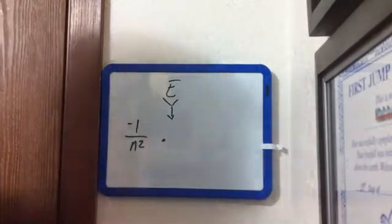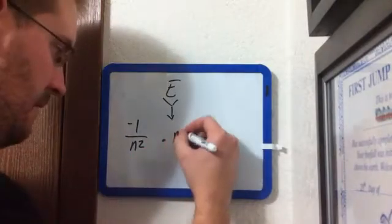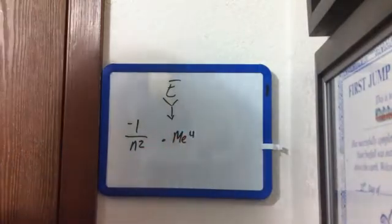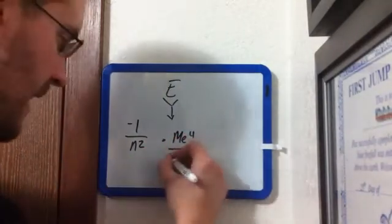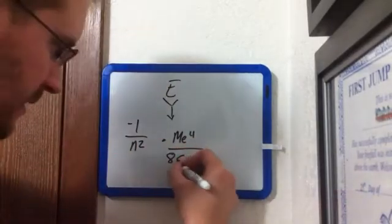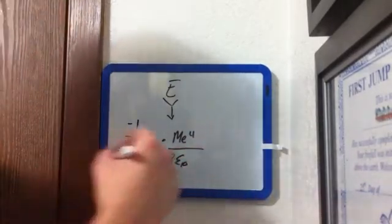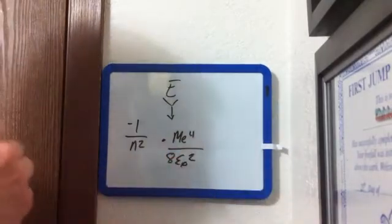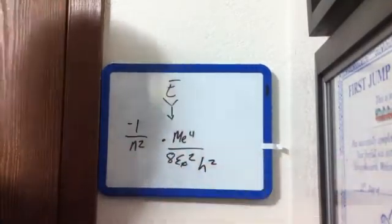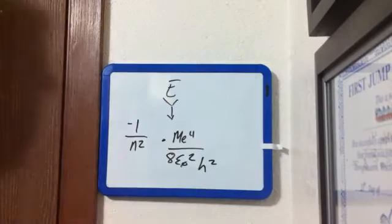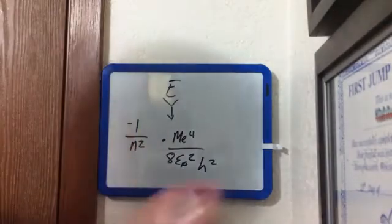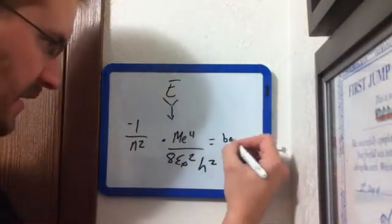And I multiply that by m e to the fourth power, divided by 8, epsilon naught squared, h squared. So when you look at this, of course all this equals the binding energy.